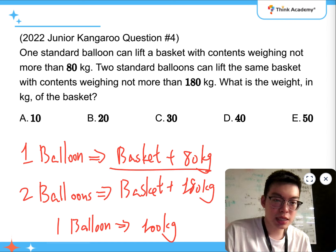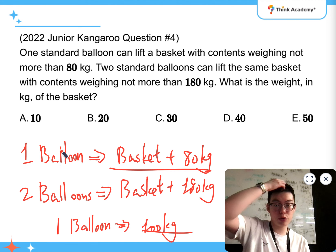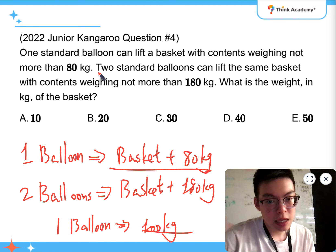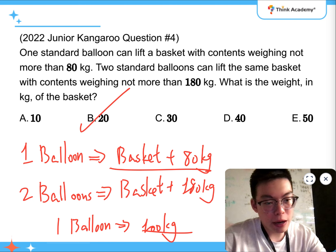and basket adding 80 kilograms is 100 kilograms. Because, if you compare the difference between them, one more balloon, 100 more kilograms. So, the basket is 100, take away 80, which is 20 kilograms.